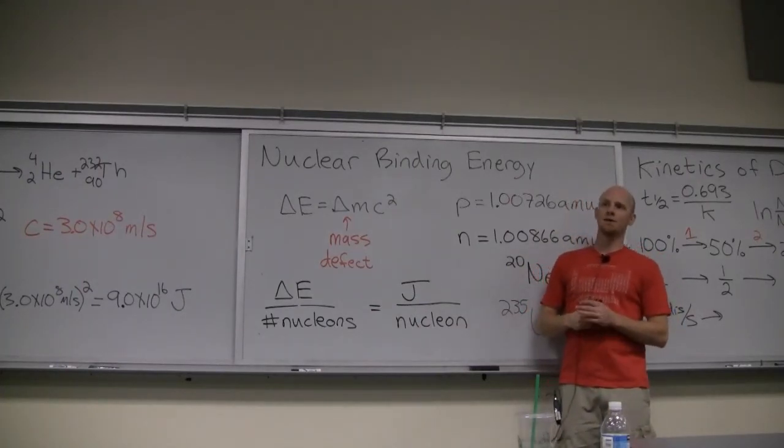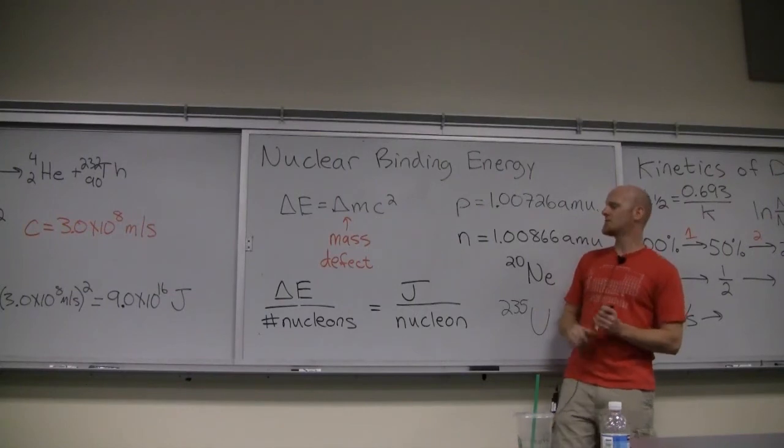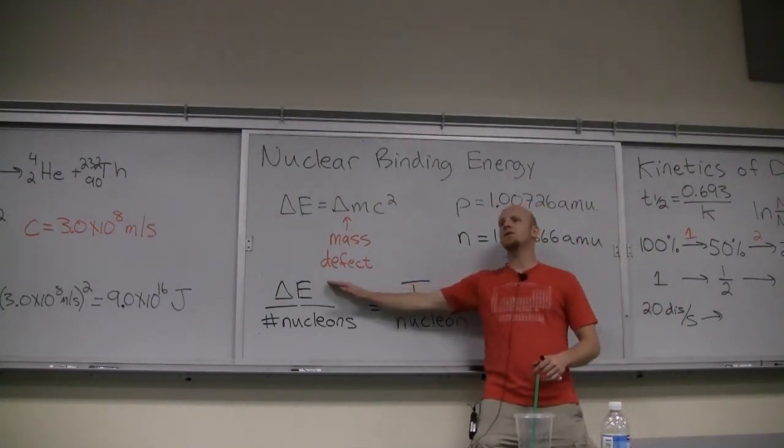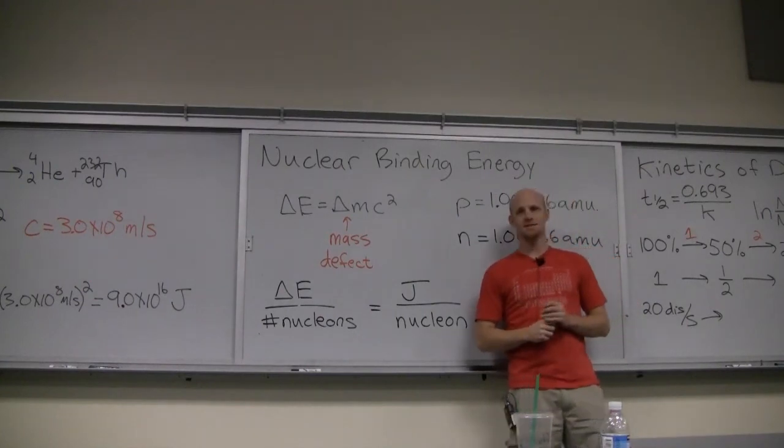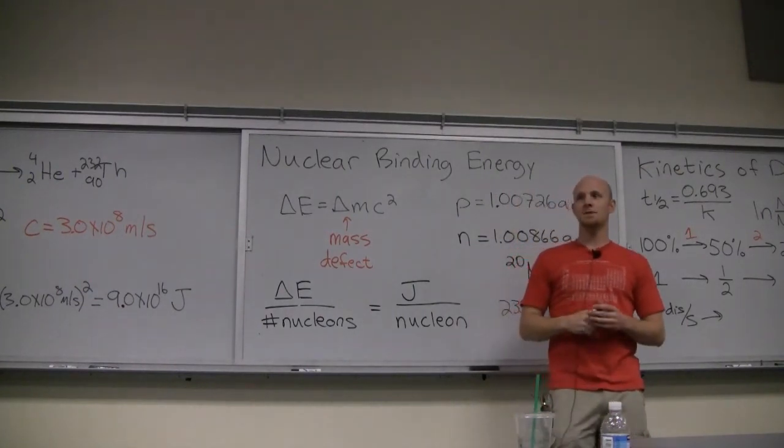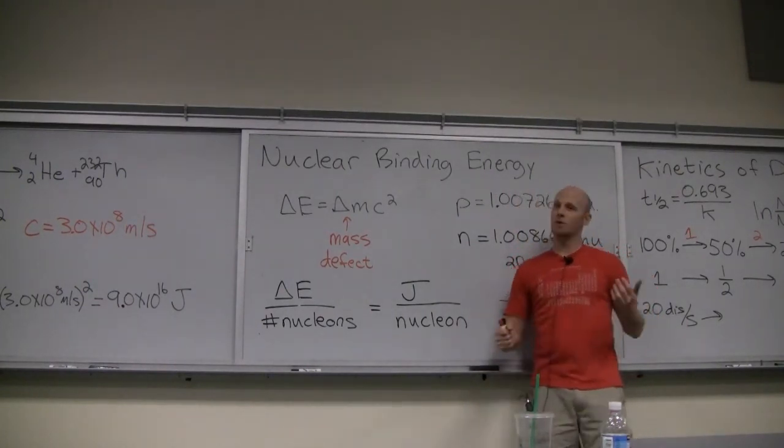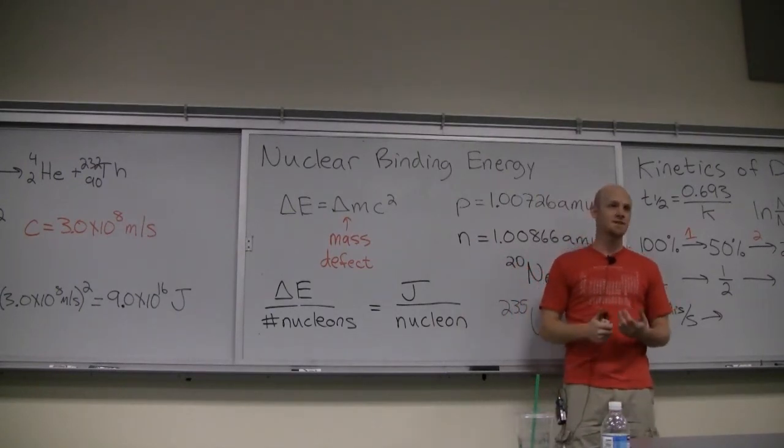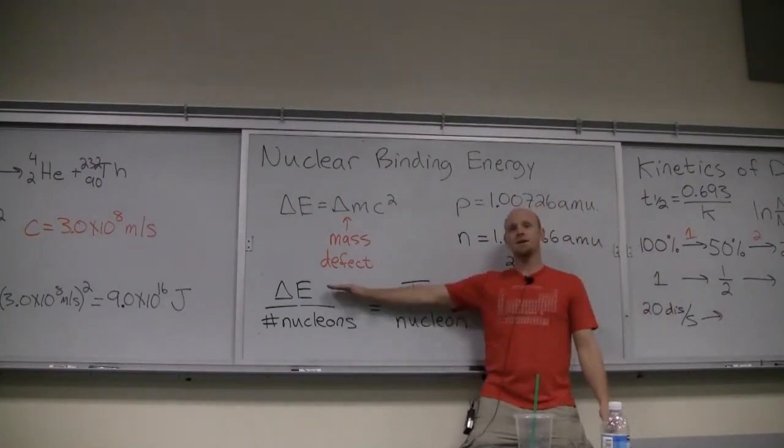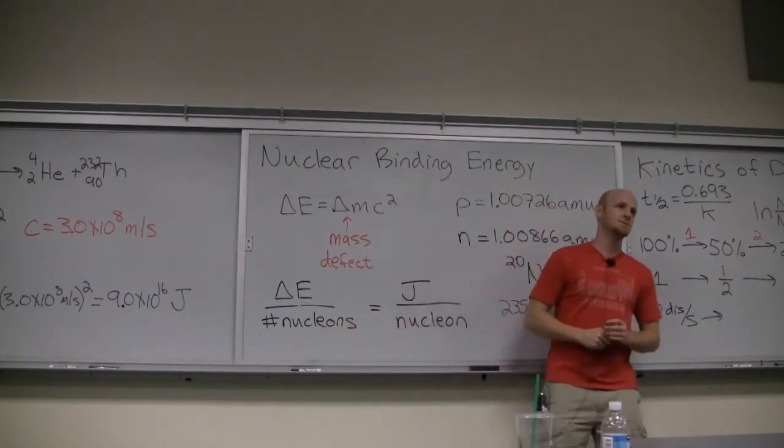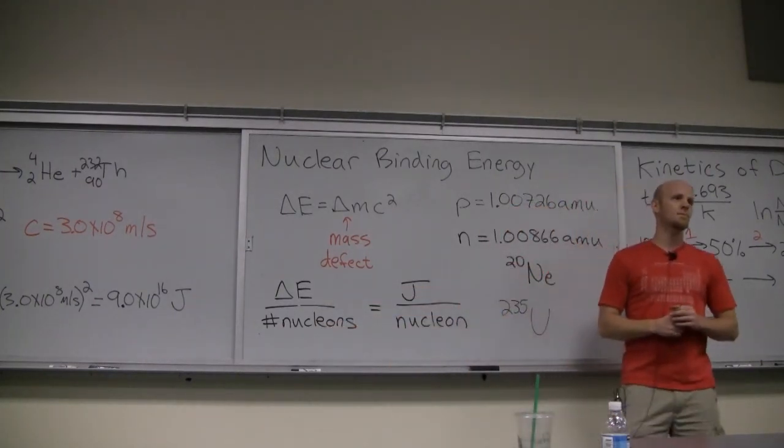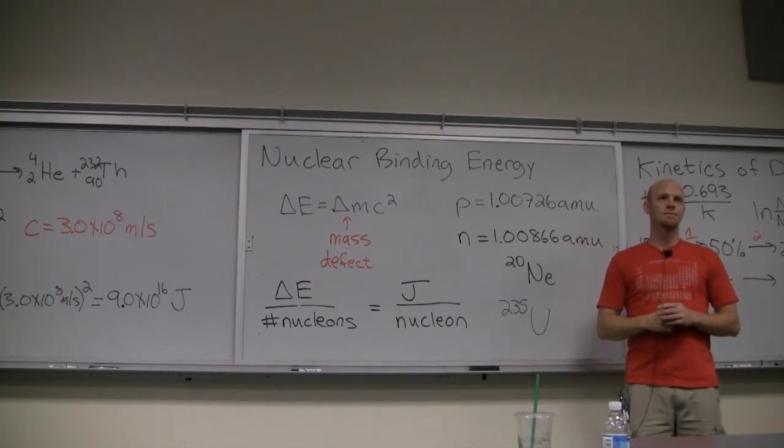Which element and which isotope has the highest nuclear binding energy per nucleon? Iron-56. We mentioned earlier. Iron-56, most stable element. Most stable nucleus I should say. And it's ultimately because it has the highest nuclear binding energy per nucleon in existence. Cool.